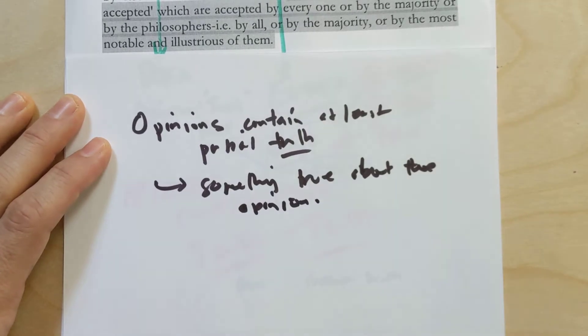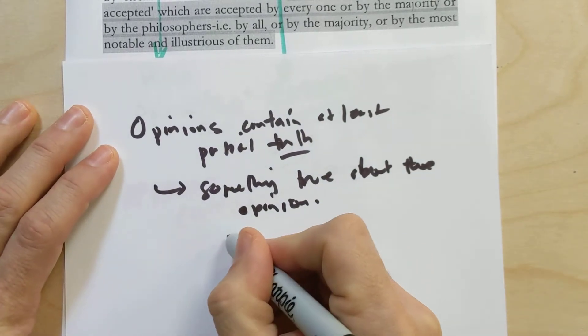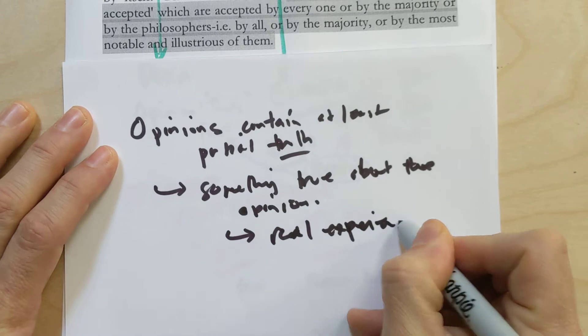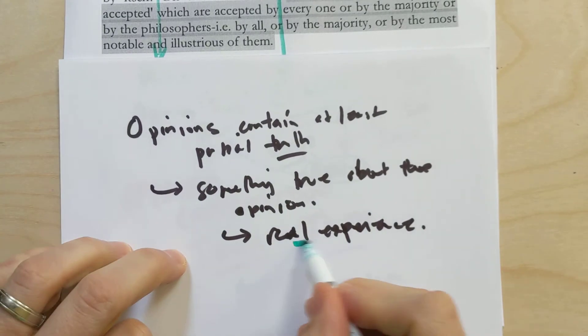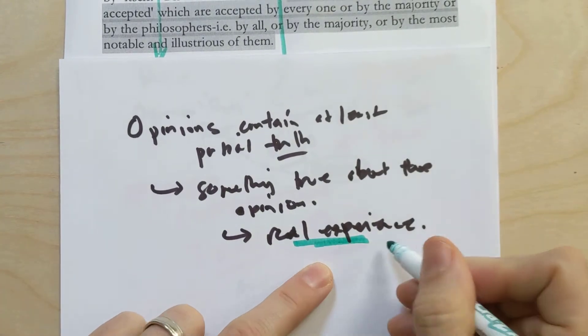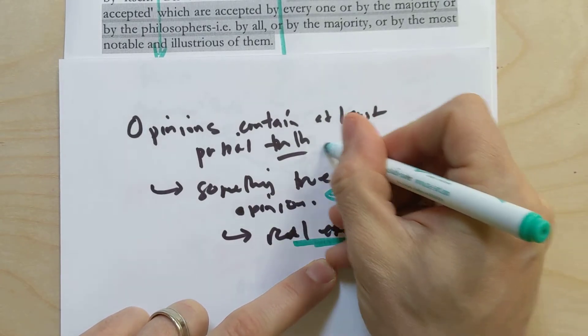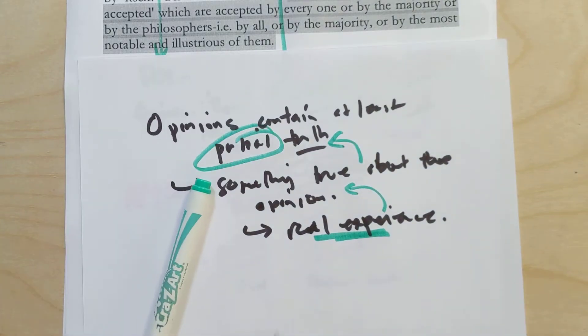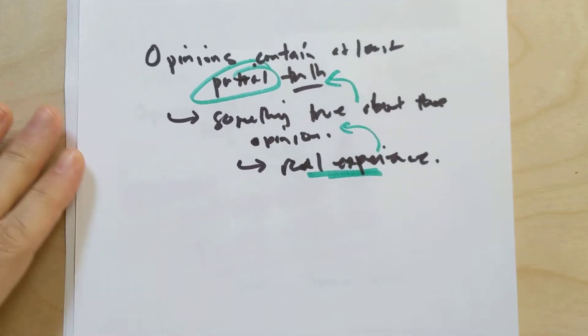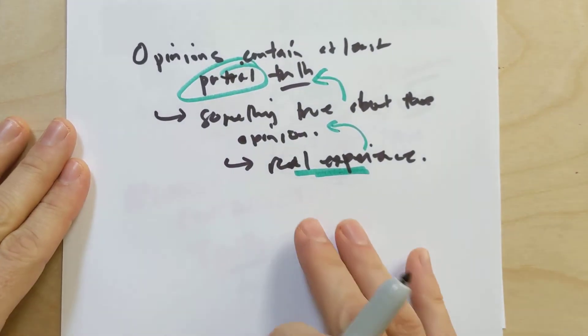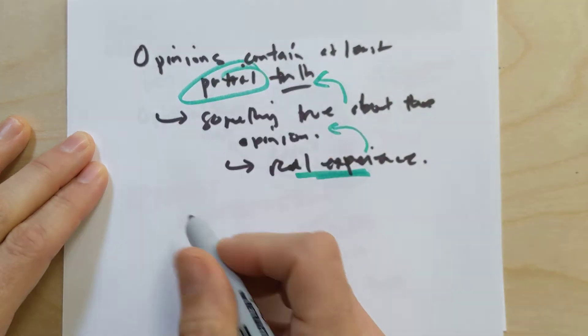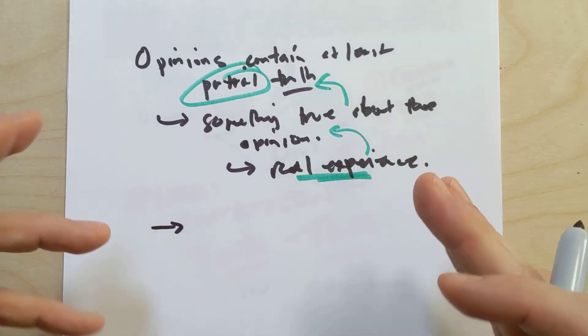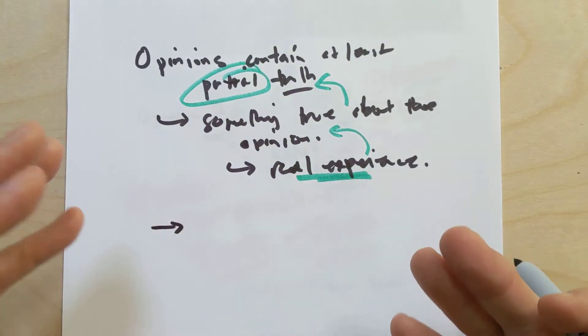There was some real experience that a person had that led them to have that opinion. So we want to trace things back to the reality of the specific experiences that led to that opinion and that at least led to some partial truth about the thing that we're trying to know and understand. When someone expresses an opinion, even opinions that we think are strange, the opinion shows that there's something about the thing that can show up the way it appeared in that person's opinion or in that person's experience.